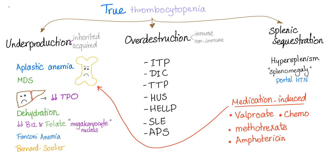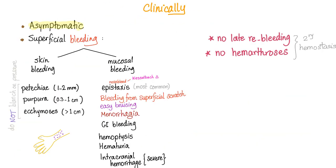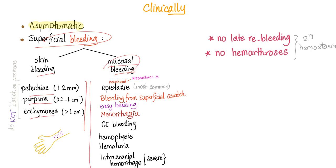The most common cause of petechiae, purpura, and ecchymosis is probably thrombocytopenia, and true thrombocytopenia has many causes as we have discussed before. Thrombocytopenia can lead to superficial bleeding, which could be either skin or mucosal bleeding. Skin can be petechiae, purpura, and ecchymosis. But never hemarthrosis, never late re-bleeding — these are signs and symptoms of secondary hemostasis defects, such as hemophilia.